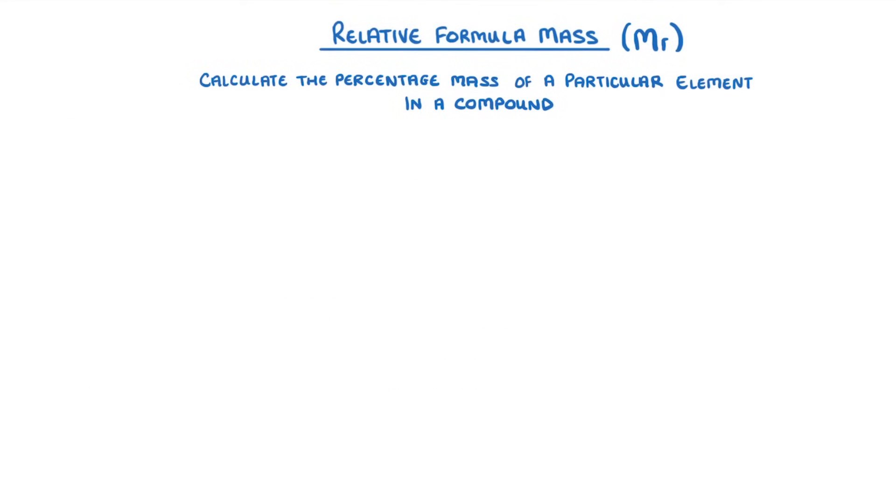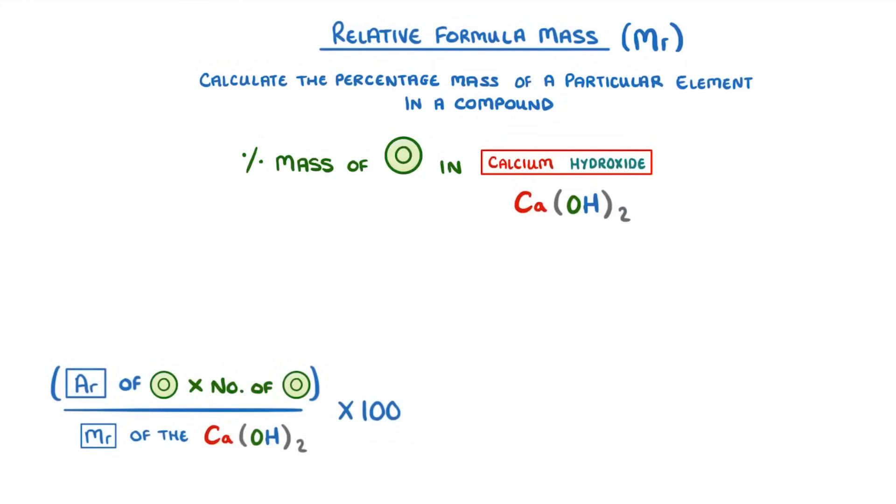Before we finish let's find the percentage mass of oxygen in calcium hydroxide which has the formula Ca(OH)2. The first thing to do is to recall our formula and check the periodic table to find the relative atomic mass of each element.